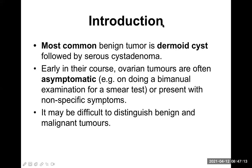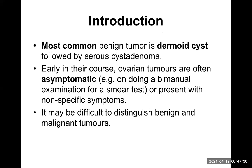The most common benign tumor from ovarian tumors is dermoid cyst, followed by serous cystadenoma. The dermoid cyst is very common and is usually benign, though malignant forms can occur. The benign form is the mature one; the malignant is the immature one. The dermoid cyst has components from all three germ layers: ectodermal, endodermal, and mesodermal. This is the hallmark of the dermoid cyst.